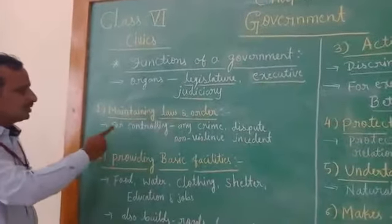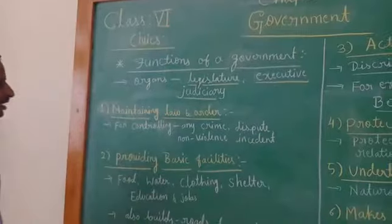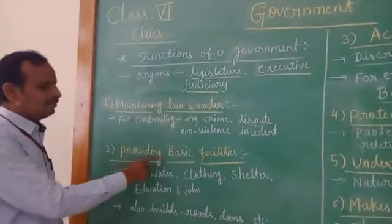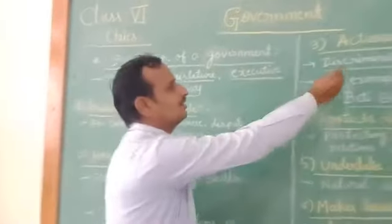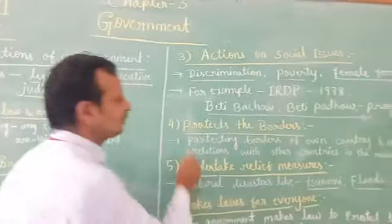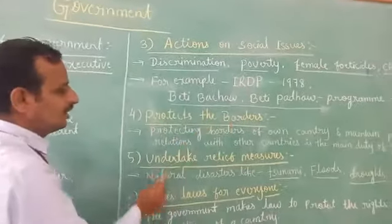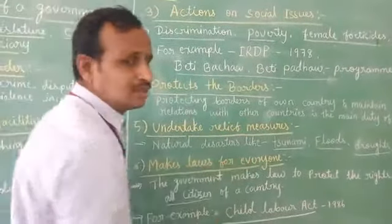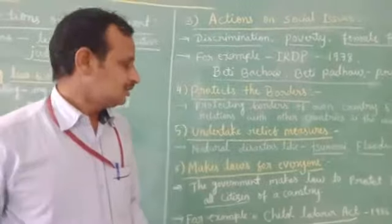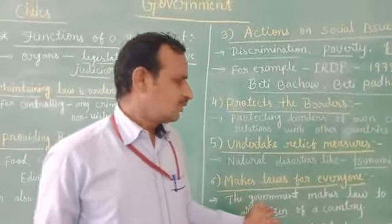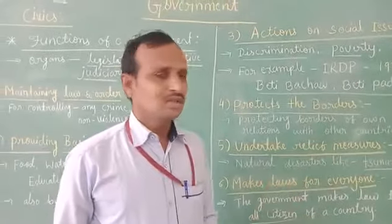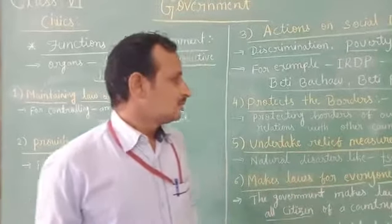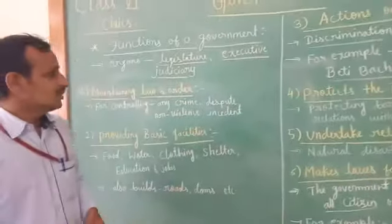Let us see the functions. There are mainly 6 functions: first, maintaining law and order; second, providing basic facilities; third, actions on social issues; fourth, protect the borders; fifth, undertake relief measures; sixth, make law for everyone. These are the main functions given in the textbook. Apart from these, there are many other functions of the government.